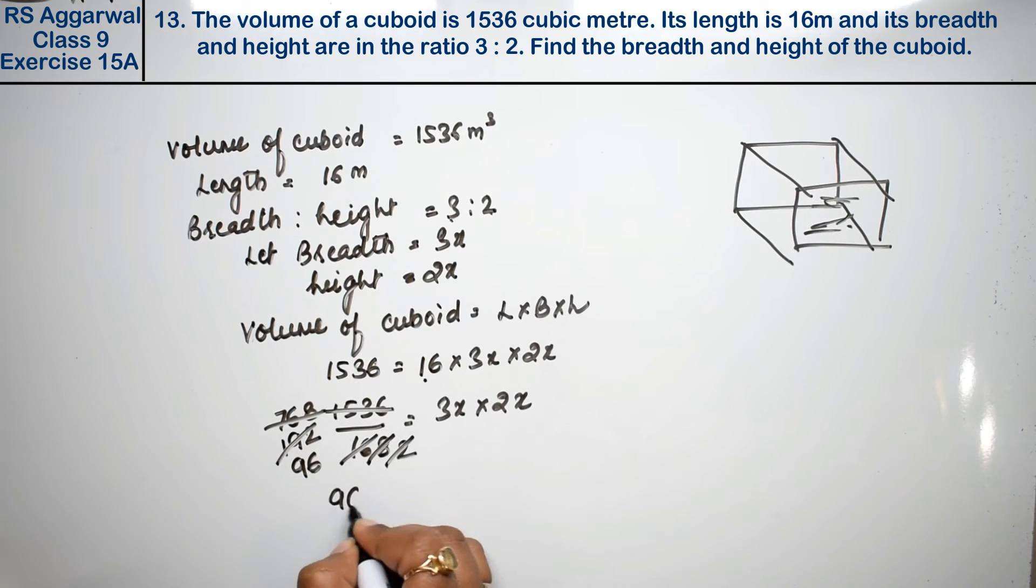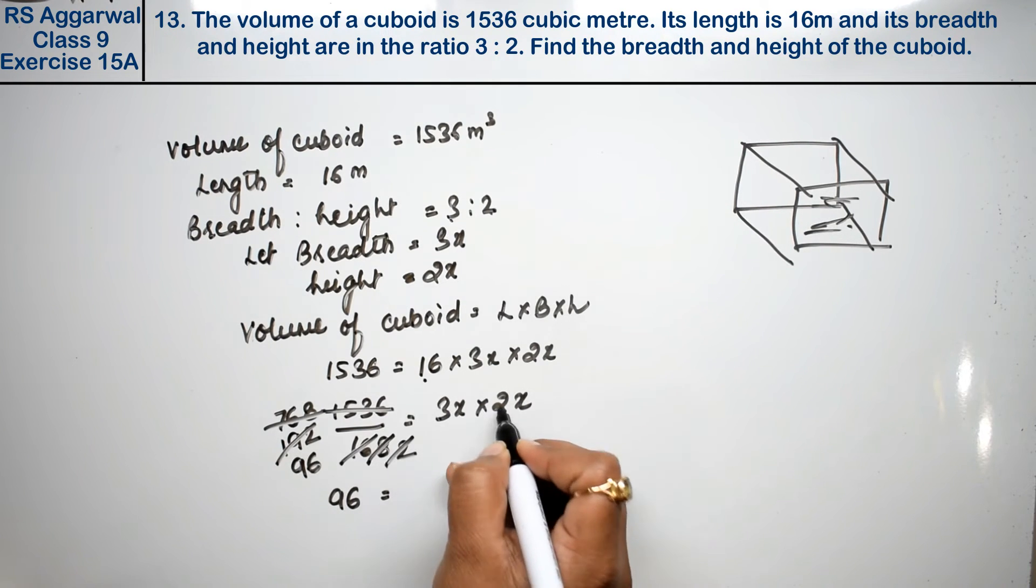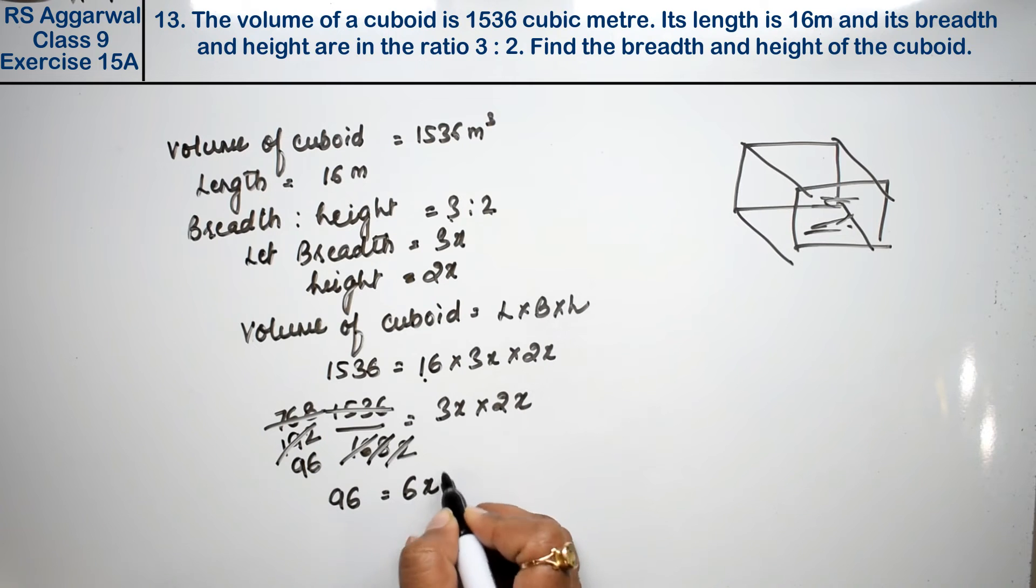So 96 equals to 3, 2's are 6, x into x is x square. X square is here and this is here, divide.